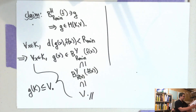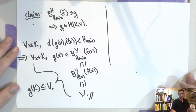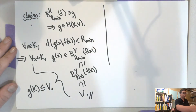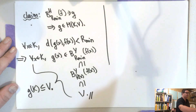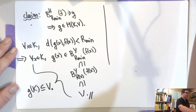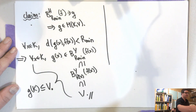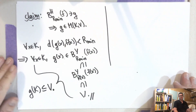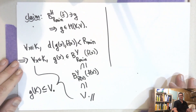And that's the end of the proof. That concludes the portion where we were showing that the metric topology and the compact-open topology are the same in this example.